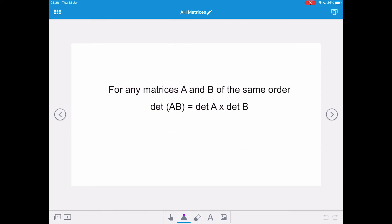The final thing that we need to note with regards to the determinant is for any matrices A and B of the same order, the determinant of the product AB equals the determinant of A multiplied by the determinant of B.